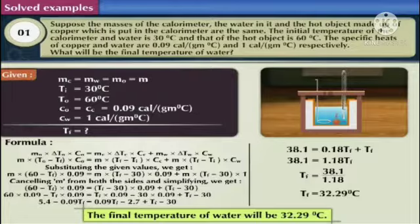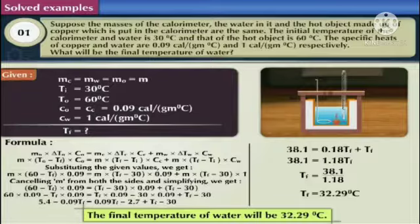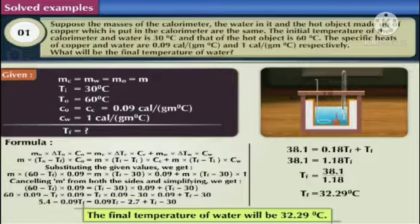Solution. Here the given values are: mass of copper (Mc) equals mass of water equals mass of object — let us take this as M. Initial temperature is 30 degrees Celsius and the temperature of the hot object is 60 degrees Celsius. Specific heat capacity of the object and calorimeter are the same because both are made up of copper, which is equal to 0.09 calorie per gram degree Celsius. Specific heat capacity of water is 1 calorie per gram degree Celsius.